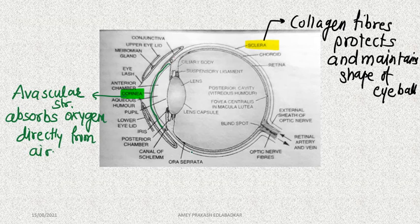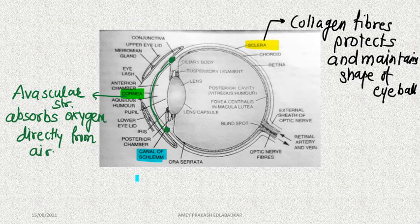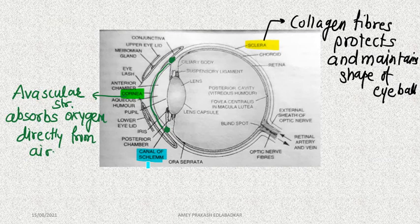At the junction of the cornea and sclera, we find a gland called the canal of Schlemm. Aqueous humor is continuously produced in the anterior chamber, and the canal of Schlemm drains off this aqueous humor into the blood. That is the function of the canal of Schlemm.